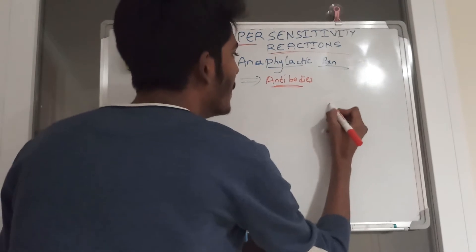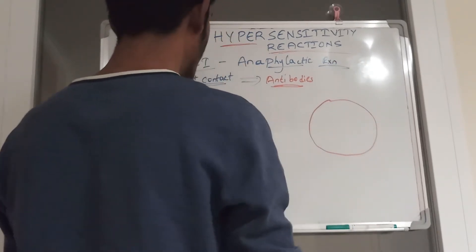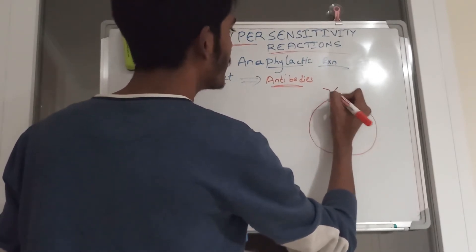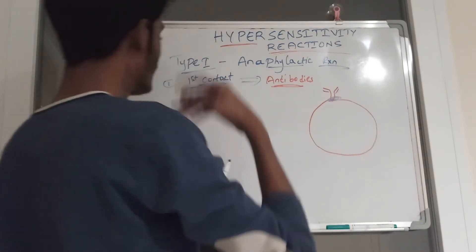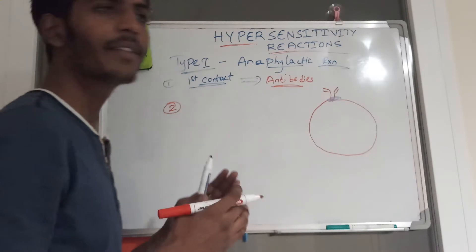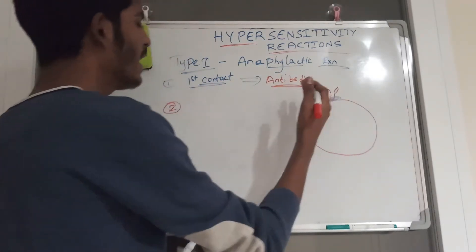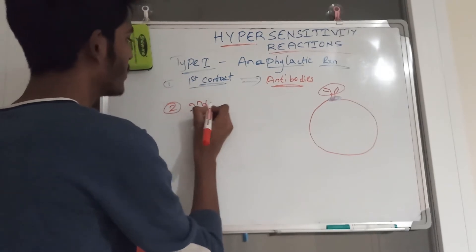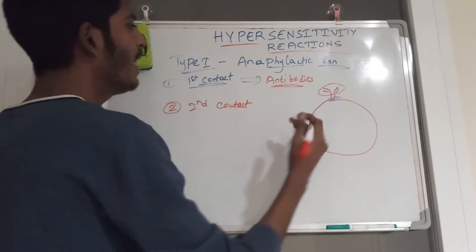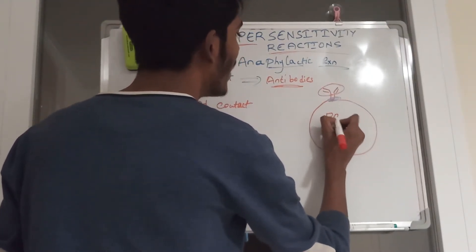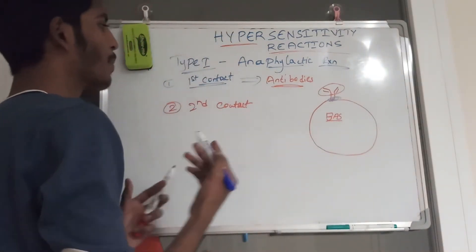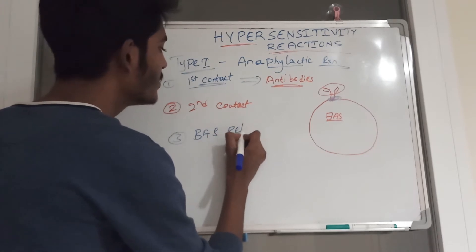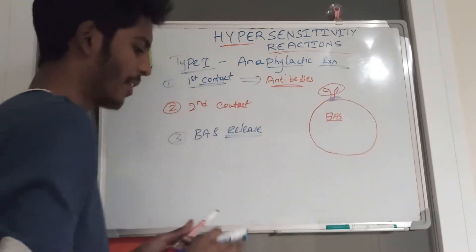On first contact, the immune system produces antibodies. These antibodies get incorporated into basophils and mast cells via receptors called Fc receptors. The second stage occurs when the person comes into contact with the antigen for a second time. On second contact, these receptors and antibodies get activated, and the cell releases its contents.